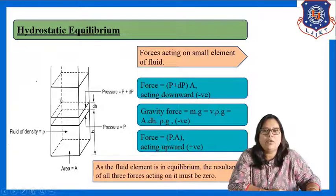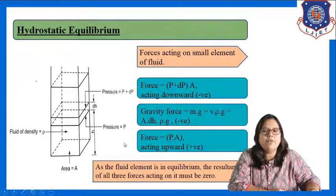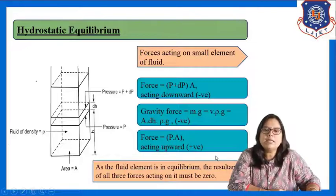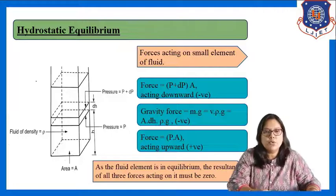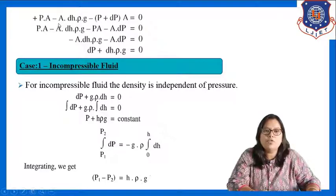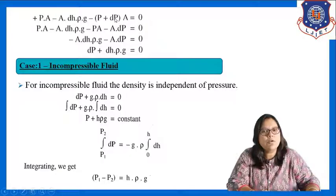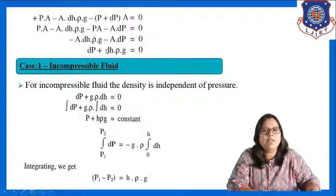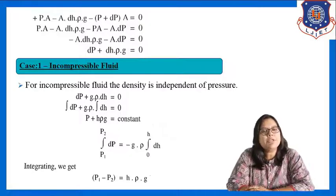Summing all forces: p·A − A·dh·rho·g − (p + dp)·A = 0. Simplifying, the positive and negative p·A terms cancel out, giving the final equation: dp + dh·rho·g = 0. This is the basic equation to calculate pressure at any height of the column.